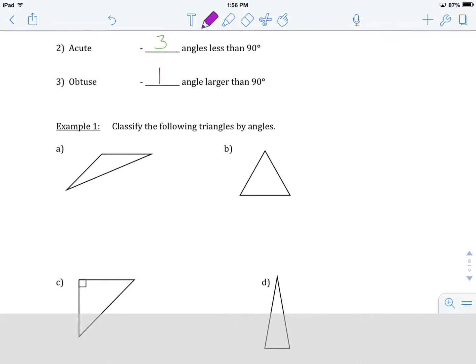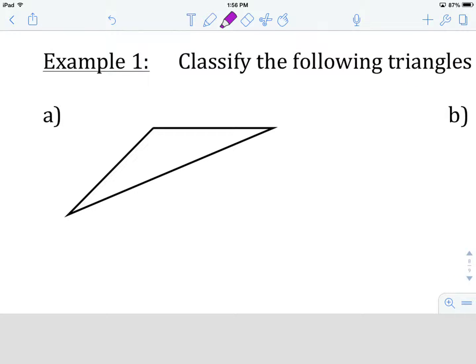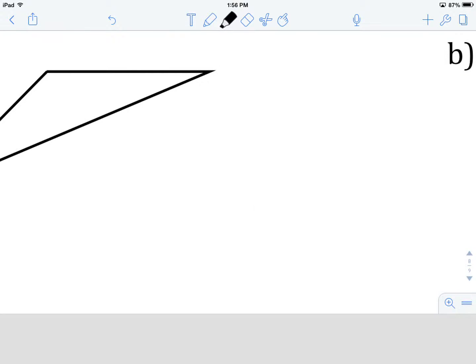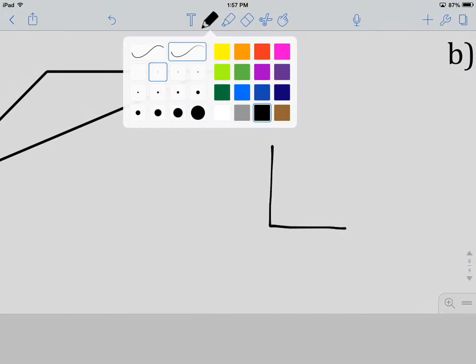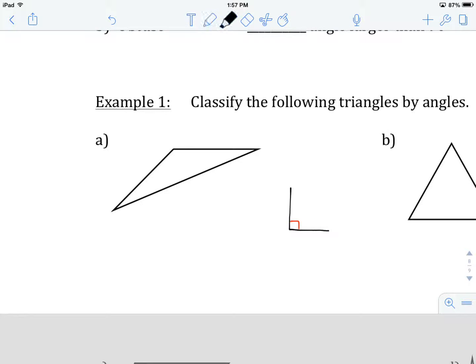If we look at triangle A in example one, I'm going to try to classify this by angles. Before we start, I want to draw quickly a 90 degree angle, which basically looks like the corner of a square. That's going to be our guide here. If angles are larger or wider than the square, that's bigger than 90, and if they're smaller than the corner of a square, those are less than 90.